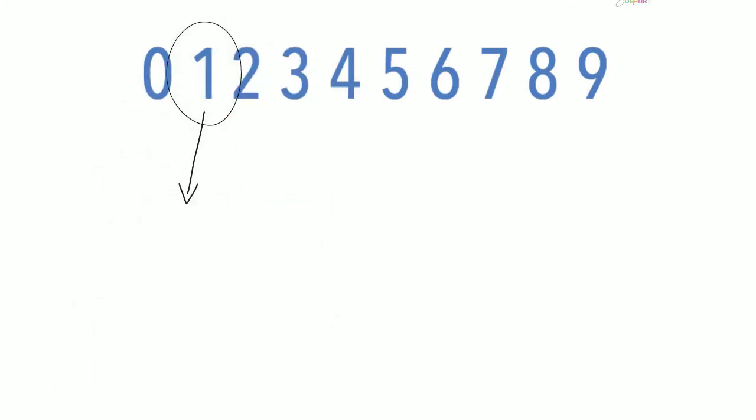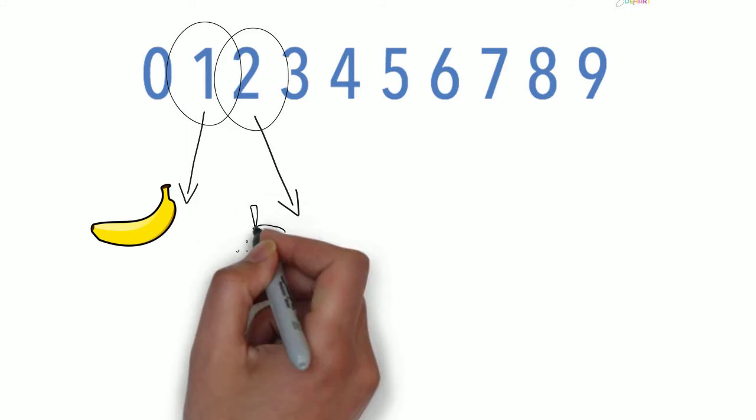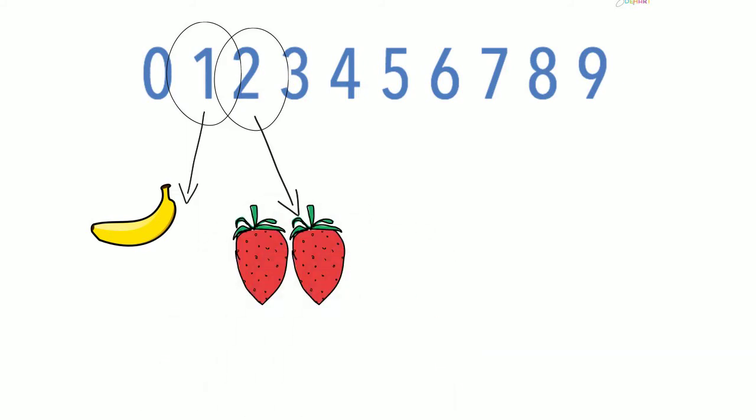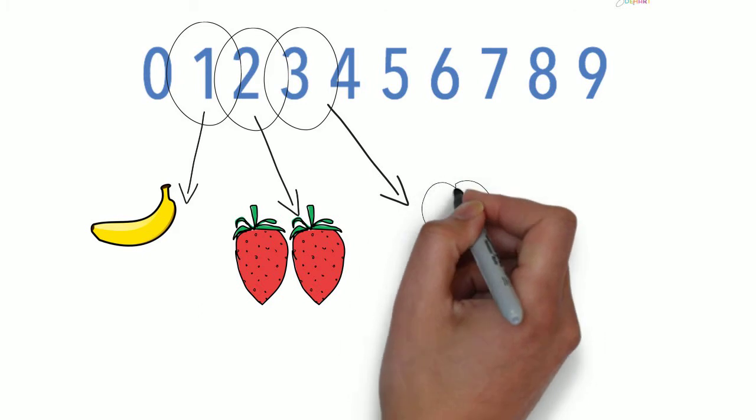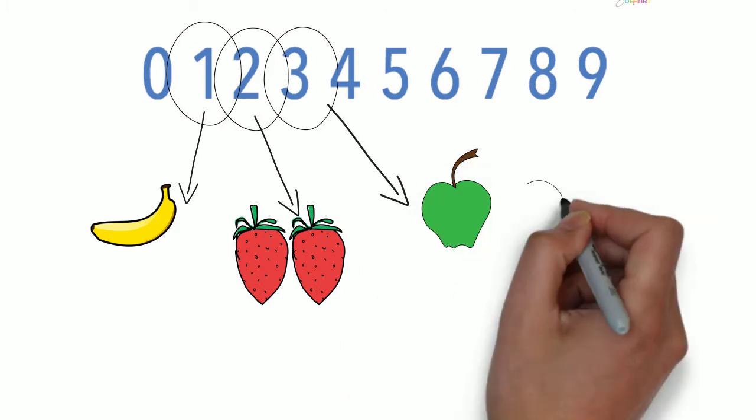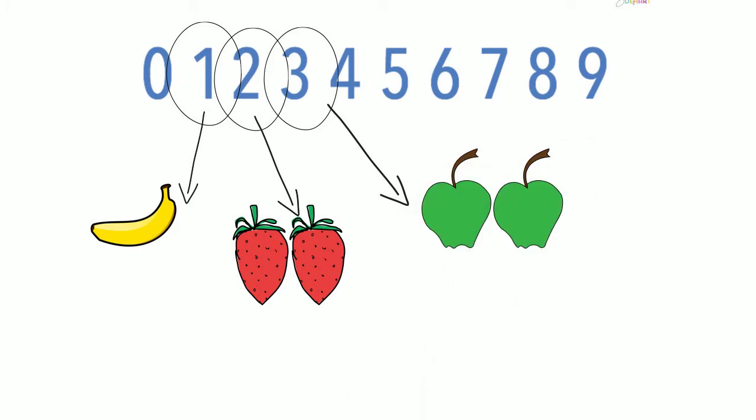One is one one. Two is two ones. And three is three ones. You can show the value of a number in the real world by showing the amount of objects, and in the maths world by writing the number.